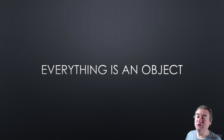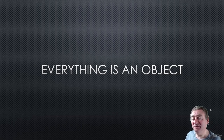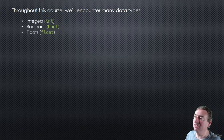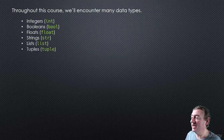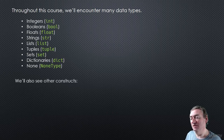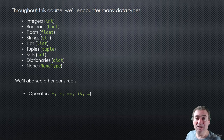In this video we're going to look at objects in Python and the statement that everything is an object in Python, which is basically true. In this course we're going to encounter many data types: integers, booleans, floats, strings, lists, tuples, sets, dictionaries, the None type, and other things as well. We're also going to deal with operators like plus, minus, the equality operator, the identity operator, and so on.